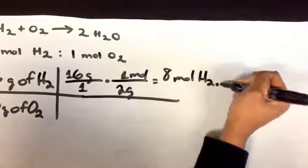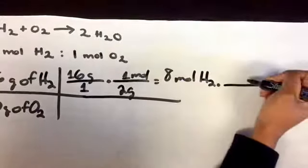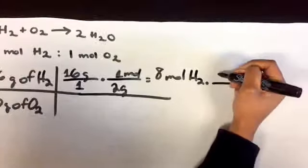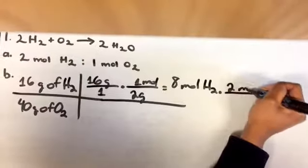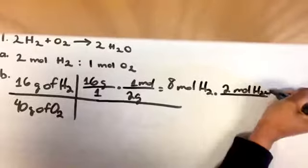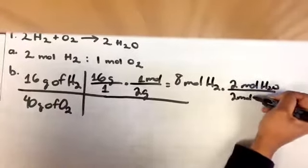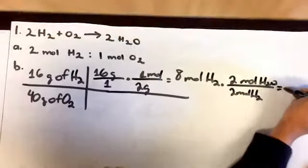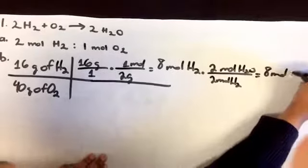So now you would have to use the molar ratio between H2O and H2, which is 2 mole H2O and 2 mole H2, and you would get 8 mole H2O.